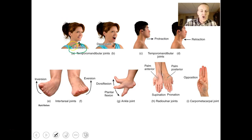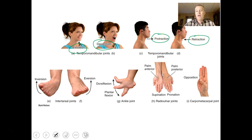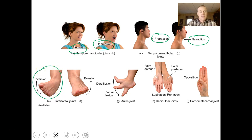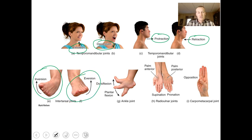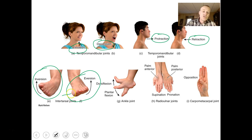If we elevate the jaw, that's elevation; if we open it, that's depression. Bringing the mandible forward is protraction; bringing it back is retraction. If we roll our ankle inward toward the pinky toe, that's inversion. If you roll it away from the pinky toe — medial side of the foot coming off the ground — that's eversion. These cause different kinds of sprained ankles.